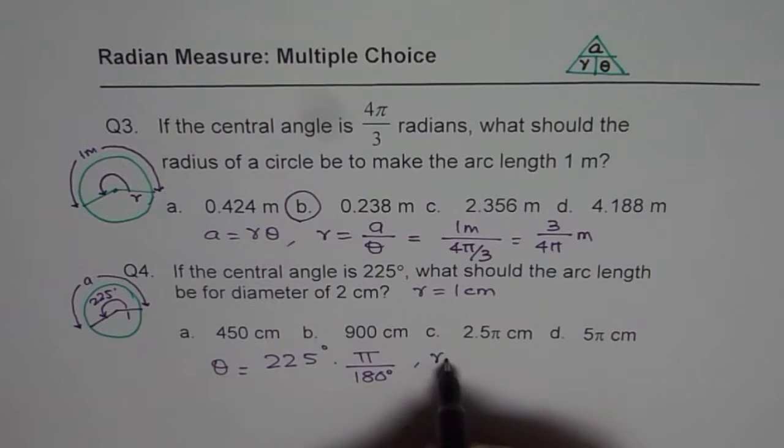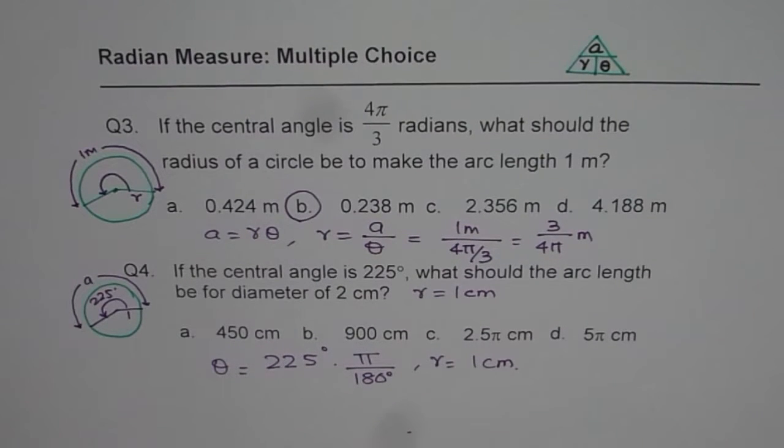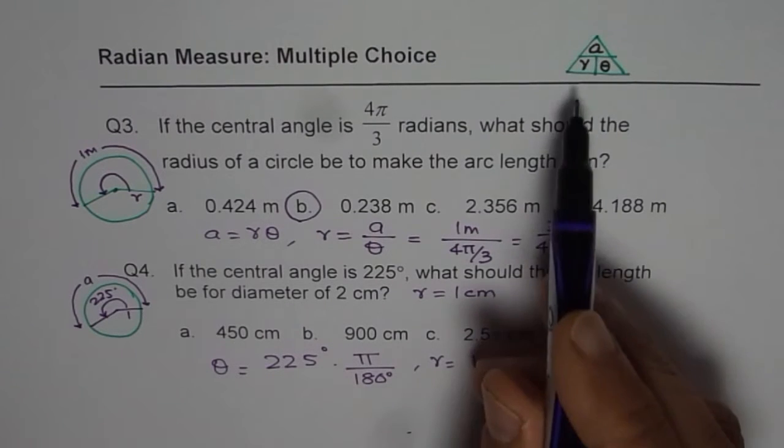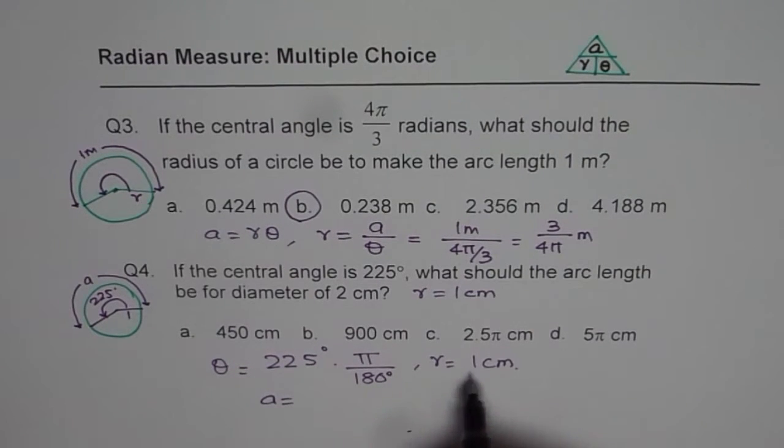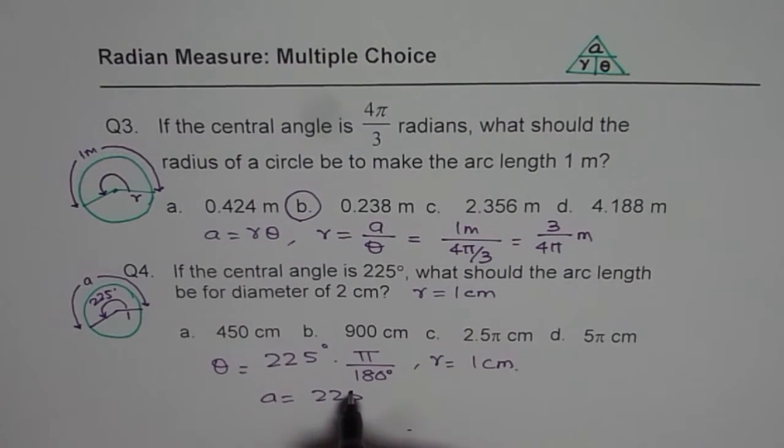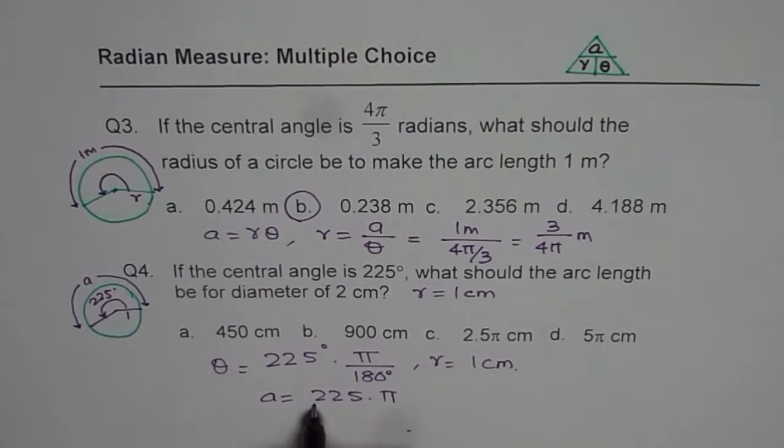Radius is given to us as 1 centimeter. Now arc length a is r times theta, so a is r is 1 times the theta itself, that means 225 times pi over 180 degrees.